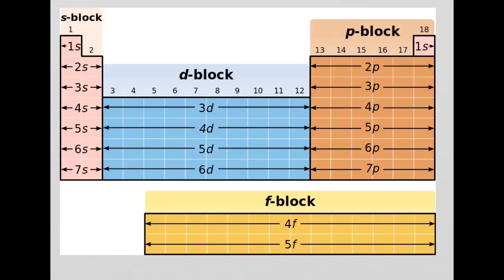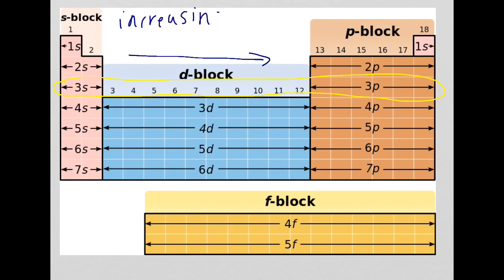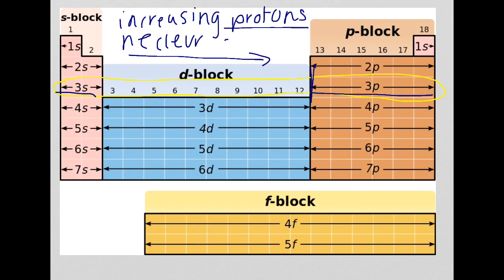Now we look at trends in the periodic table. The specification requires you to know the trend across a period — specifically period 3. Ionization energy increases across a period because there is an increasing number of protons, the same amount of shielding, and the same distance from the nucleus. Increased protons mean increased nuclear attraction, so it's harder to remove the electrons, giving an increased ionization energy.